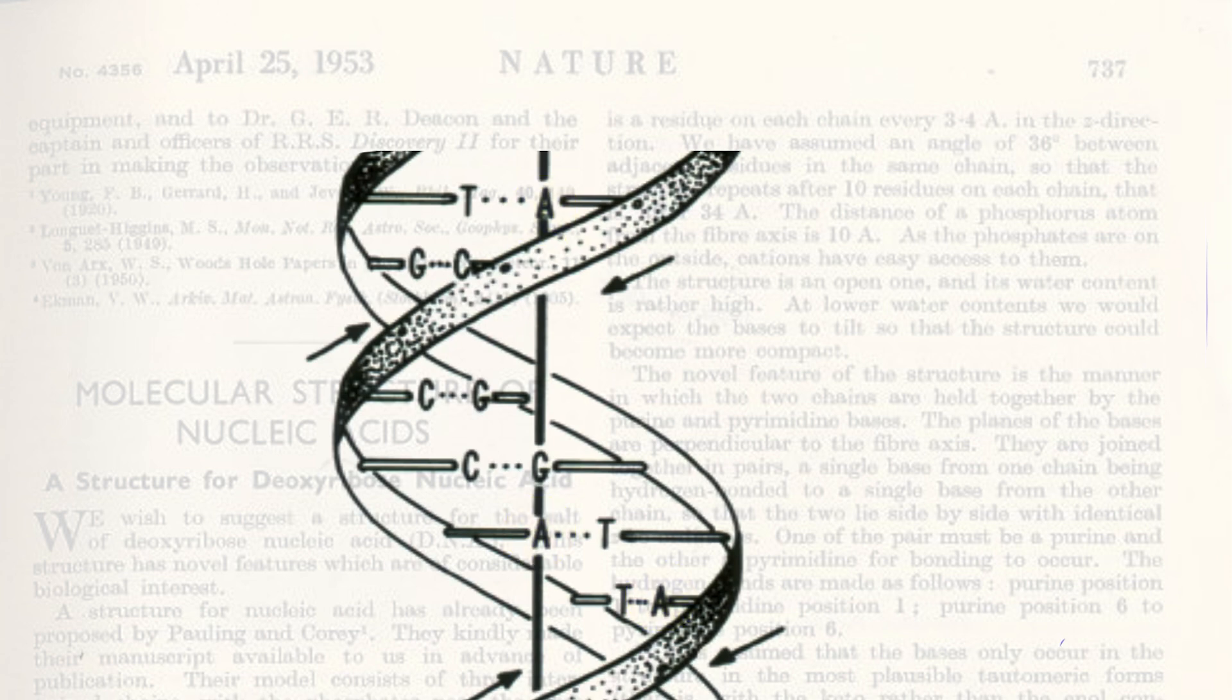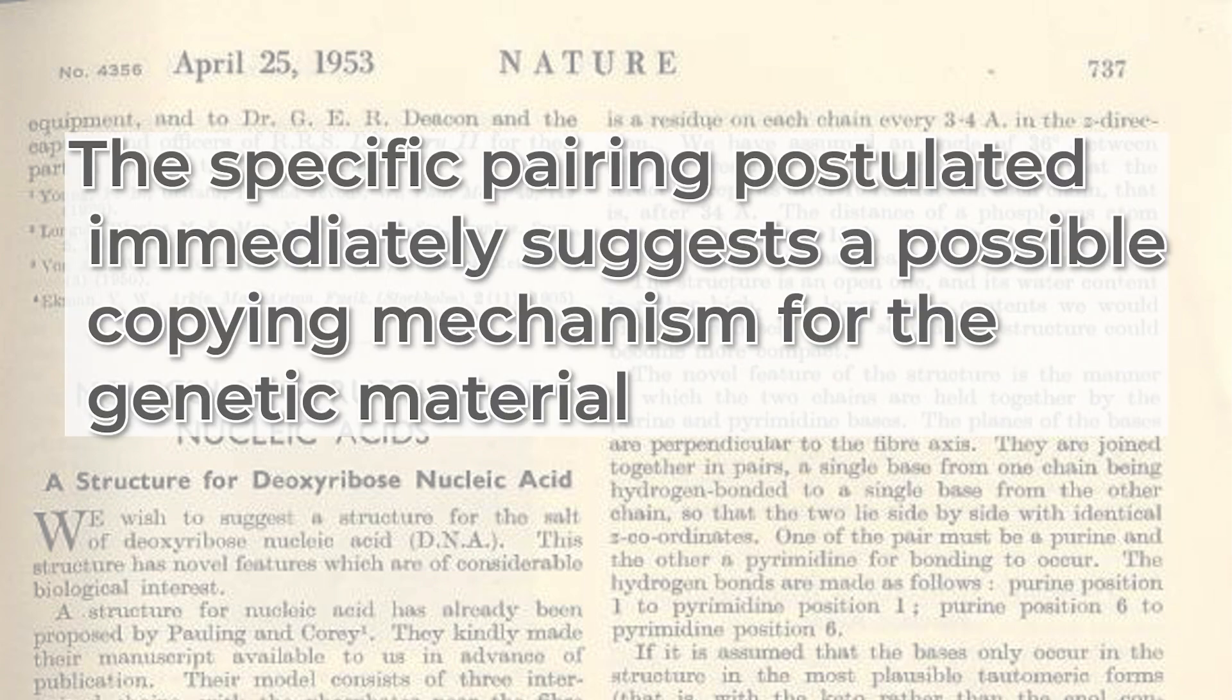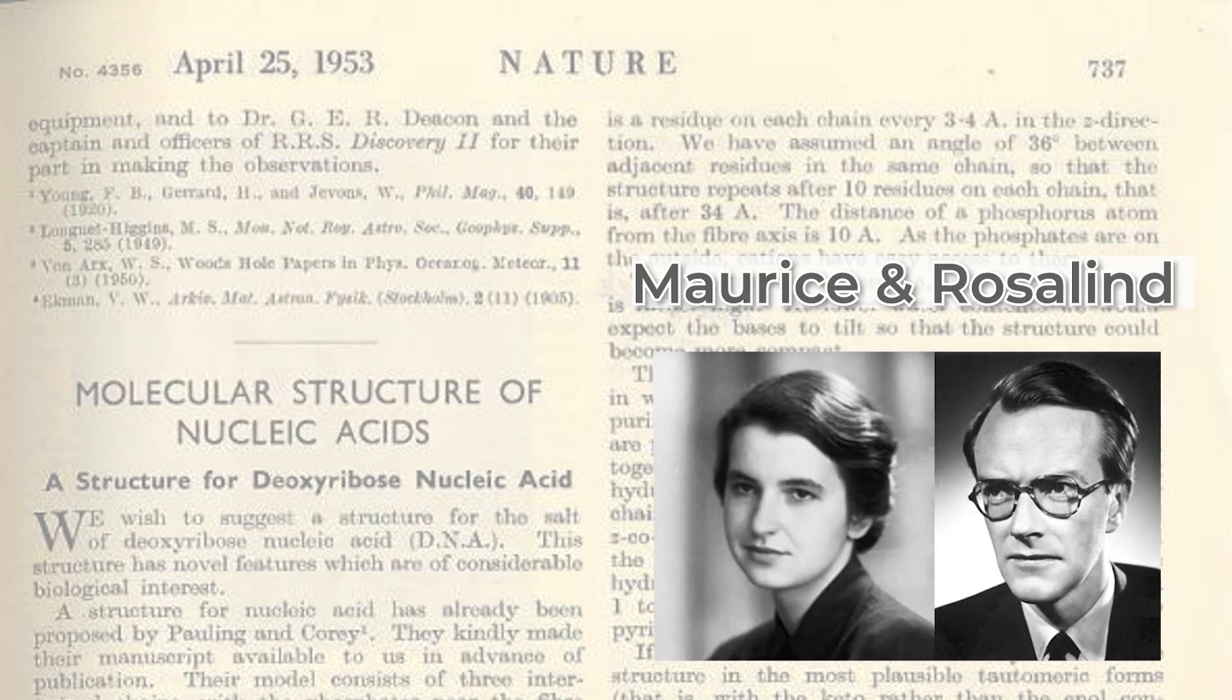The nucleotide rungs are complementary to each other. Wherever there is an A on one strand, there is a T in the same position on the other strand. Similarly, where there is a G on one strand, there is a C in the same position on the other strand. They submitted a 900-word paper to the scientific journal Nature. The paper concluded that the specific pairing postulated immediately suggests a possible copying mechanism for the genetic material. Maurice and Rosalind published their findings in a separate paper following James and Francis.